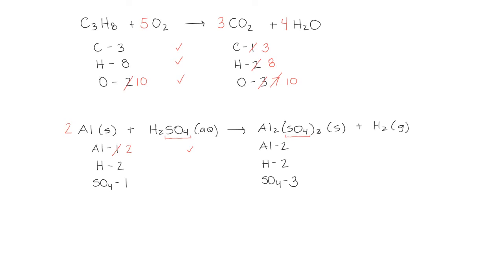It looks like we already have balanced hydrogen — 2 on the left and 2 on the right — so let's move on to the sulfate. We have 1 sulfate on the left and 3 on the right. So let's try a 3 in front of the sulfuric acid on the left, which gives us 3 sulfate, but also changes the number of hydrogen from 2 to 6. So our sulfate is balanced, but now our hydrogen isn't. Since we have 6 on the left and 2 on the right, let's try a 3 in front of the hydrogen gas, which changes the hydrogen on the right to 6, meaning we now have balanced hydrogen. So our balanced equation is: 2 moles of aluminum plus 3 moles of sulfuric acid produces 1 mole of aluminum sulfate plus 3 moles of hydrogen gas.